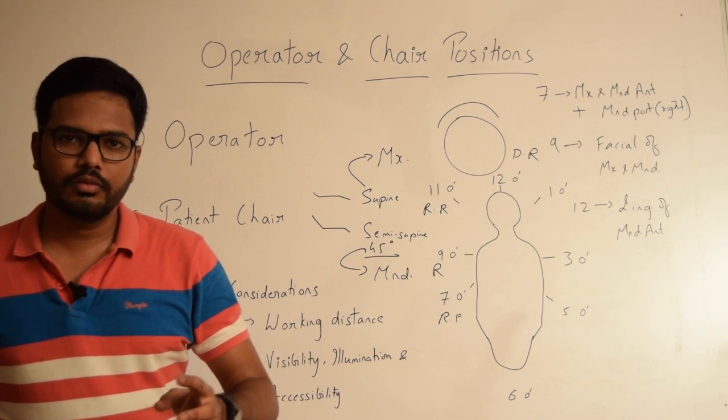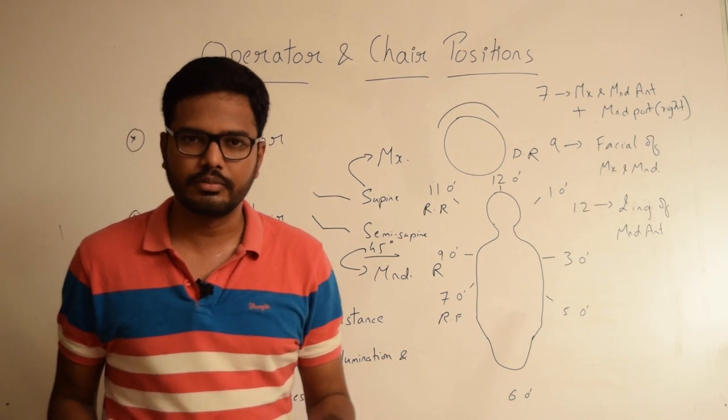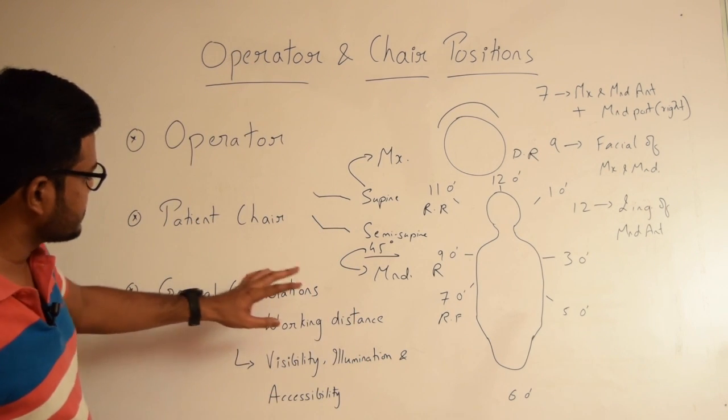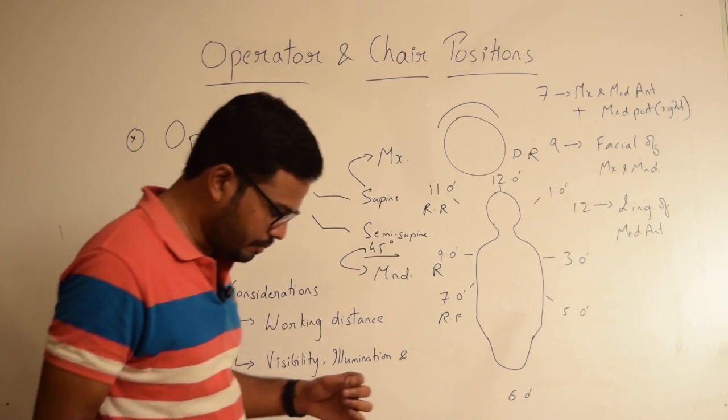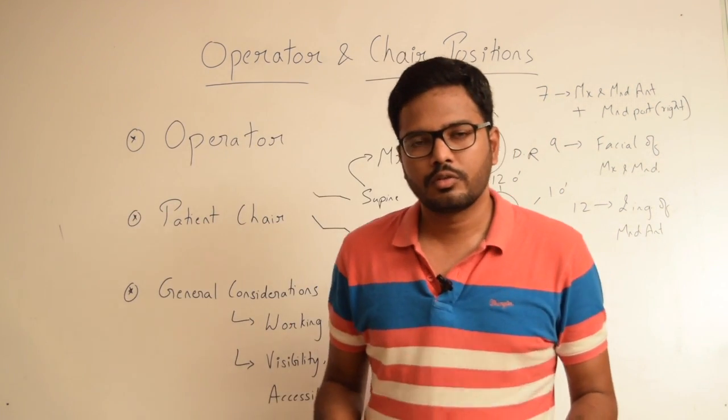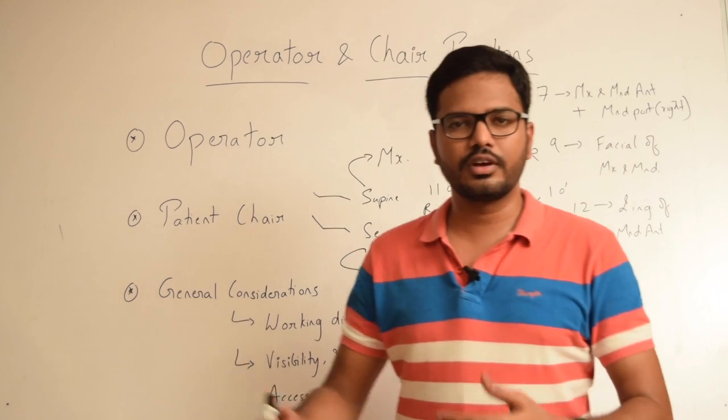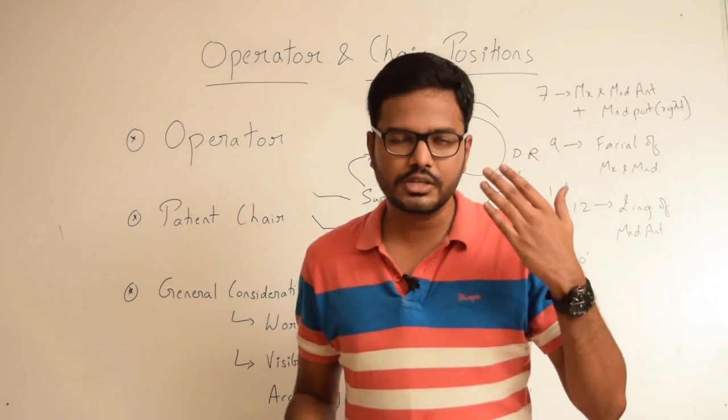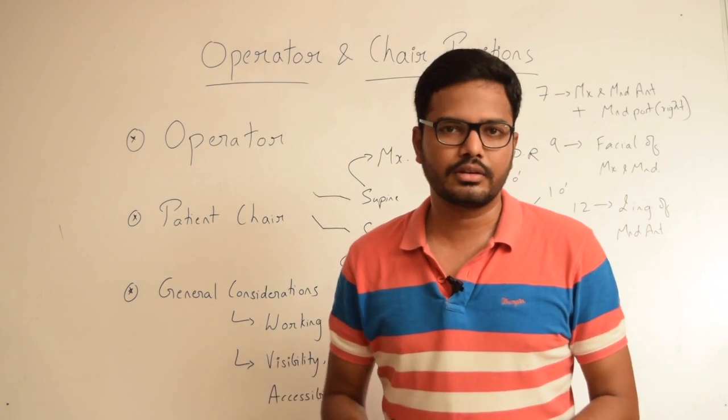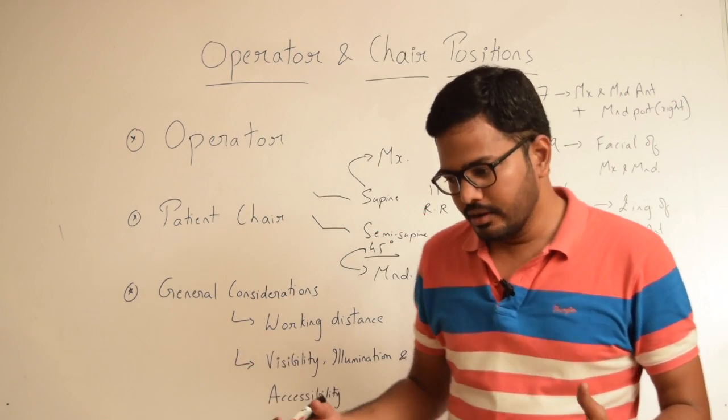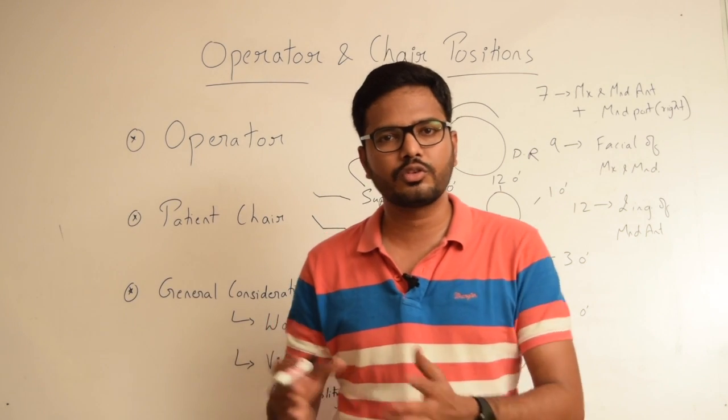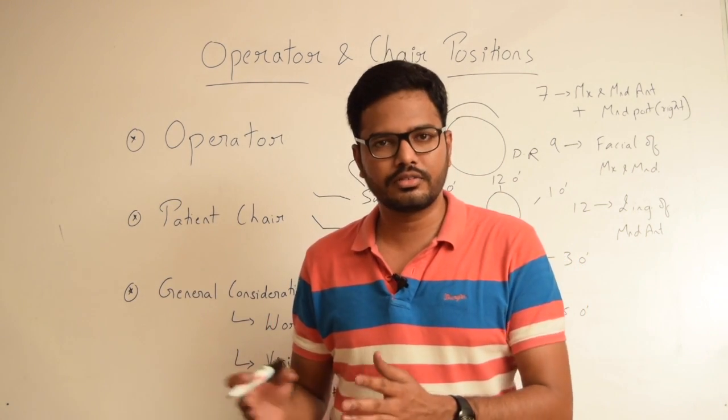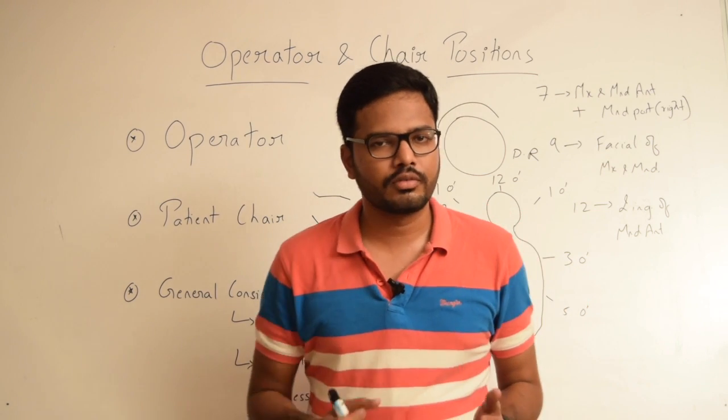Moving on to the general considerations, the most important aspect is working distance. What is working distance? Working distance is the distance between the vision and the operating field, the oral cavity. Ideally working distance can have a range of 28 to 35 centimeters, or it should be equivalent to the distance while we are reading a book.